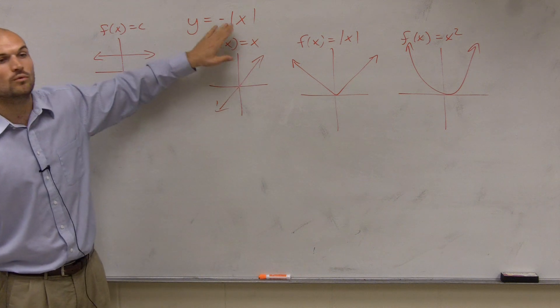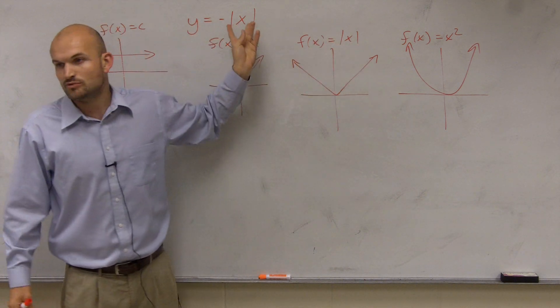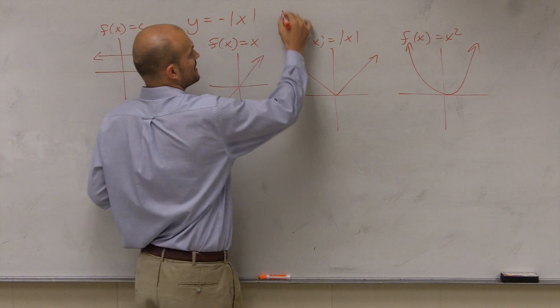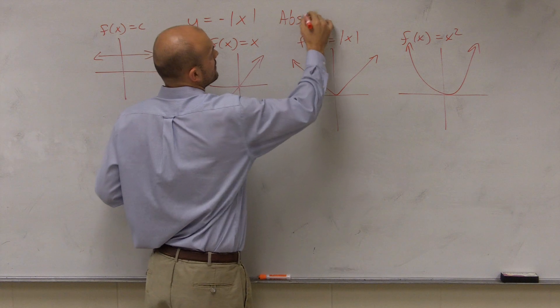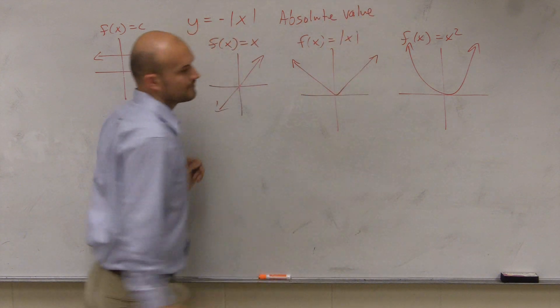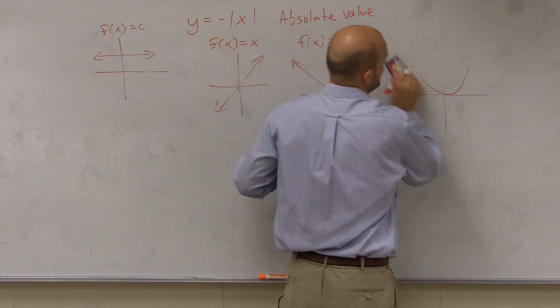So what we need to do is determine which one is this. Obviously, we can see that we have these two bars here, which represent absolute value. So this function is going to be an absolute value function. And that's going to become very helpful when we want to graph. So we know it's an absolute value function, we need to know what the parent graph is.